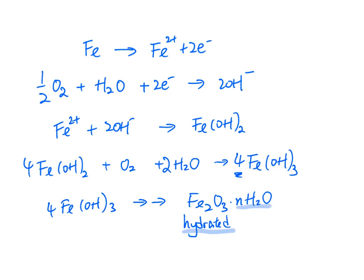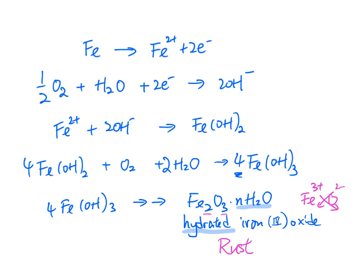The iron(III) hydroxide further reacts to give hydrated iron(III) oxide. It is called 'hydrated' because it contains water. The formula is Fe2O3, which comes from Fe3+ and O2− crossing over to give Fe2O3. This is the chemical name of rust.